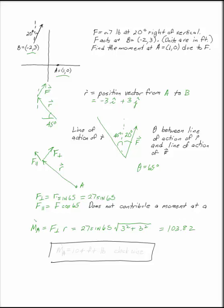Don't forget to answer the question. Your moment at A is, in vector form, 104 foot-pounds clockwise. It has to have a direction. It has to have three sig figs and units.